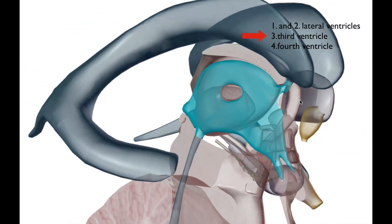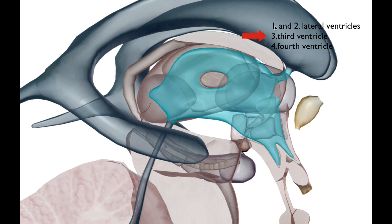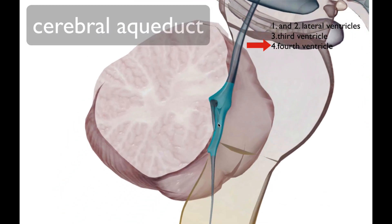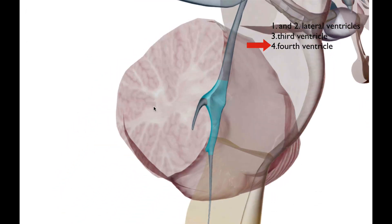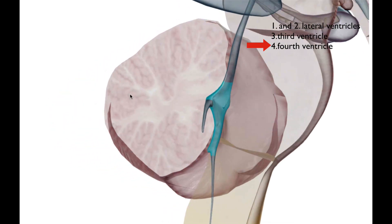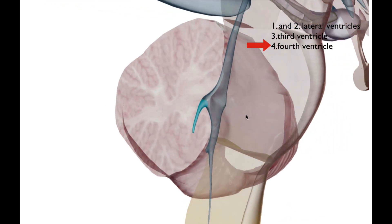As mentioned, all four ventricles are connected. Connecting the third ventricle with the fourth ventricle is what's called the cerebral aqueduct, which connects those two ventricles. The fourth ventricle lies just in front of the cerebellum and just behind the pons — in between the two. This fourth ventricle also has what's called a lateral recess.